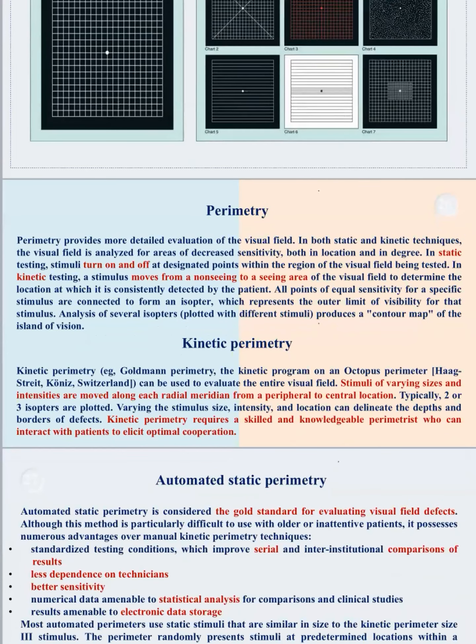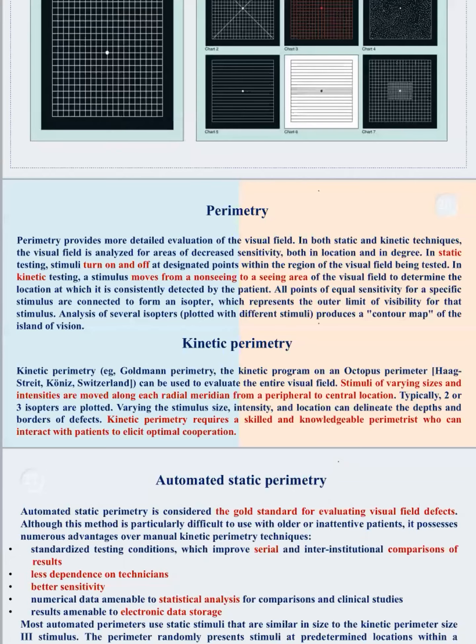Regarding perimetry — it is the gold standard. Which is better, kinetic or static? Kinetic may be more helpful in some rare neuro-ophthalmic diseases affecting only the far periphery, but automated static perimetry — like Humphrey Field Analyzer or Octopus — is the gold standard, because all data is reproducible, can be used in statistical analysis, data is stored, and you don't depend on the clinician's or technician's skills. You can also detect progression. These details will be mentioned again in the glaucoma section.